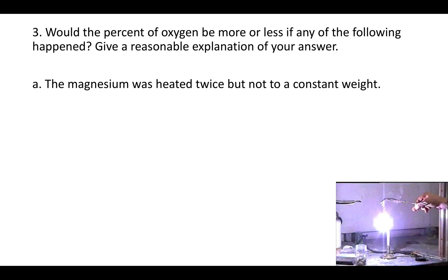In this first scenario, it says the magnesium was heated twice but not to a constant weight. If you remember, you took a strip of magnesium, you heated it in the flame. And when you did that, it got so hot that it made the oxygen in the air start reacting with it, start sticking to it. And when the oxygen in the air started sticking to the magnesium, it made the mass of your sample bigger. Because now you don't just have the magnesium, you have the magnesium and the oxygen that's sticking to it. So the weight increased.